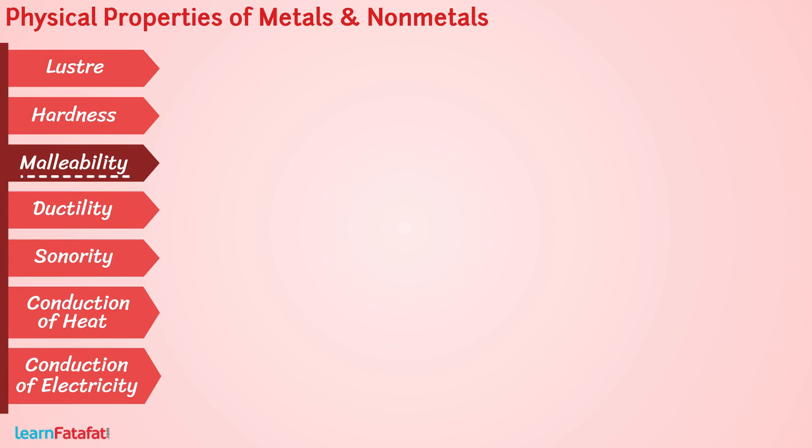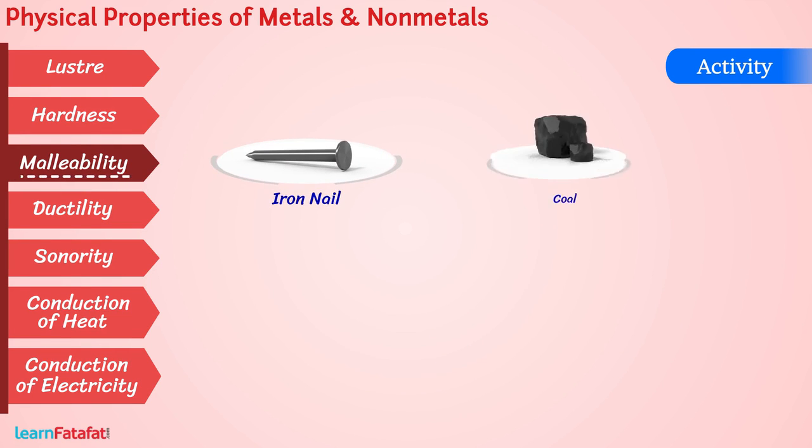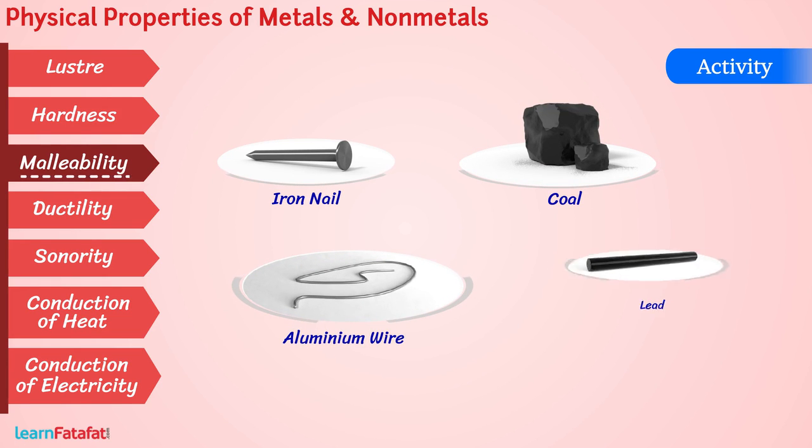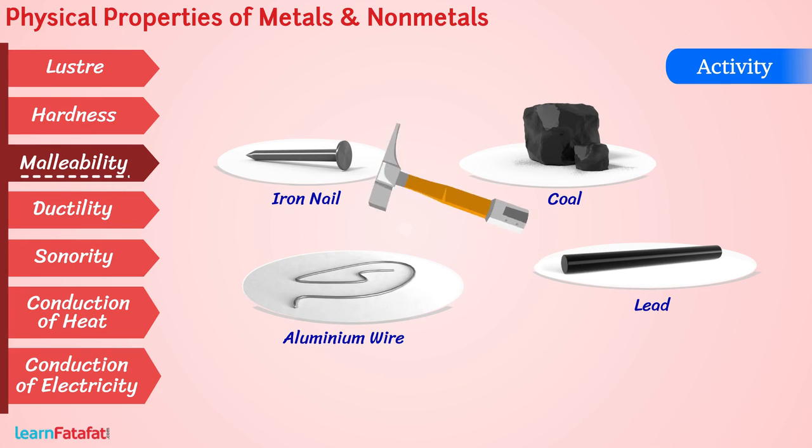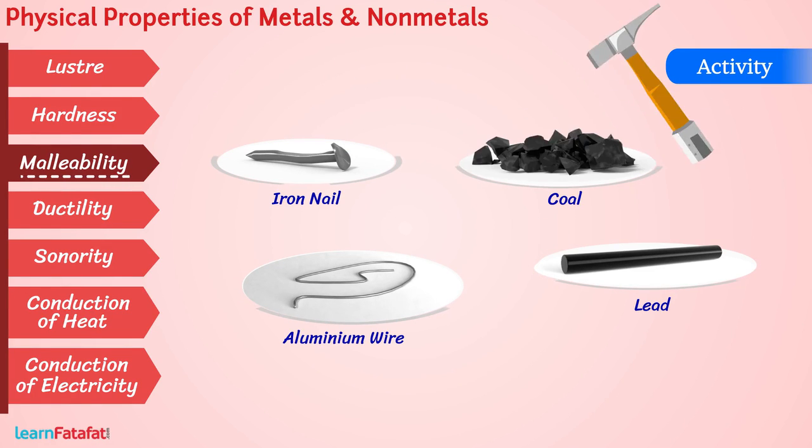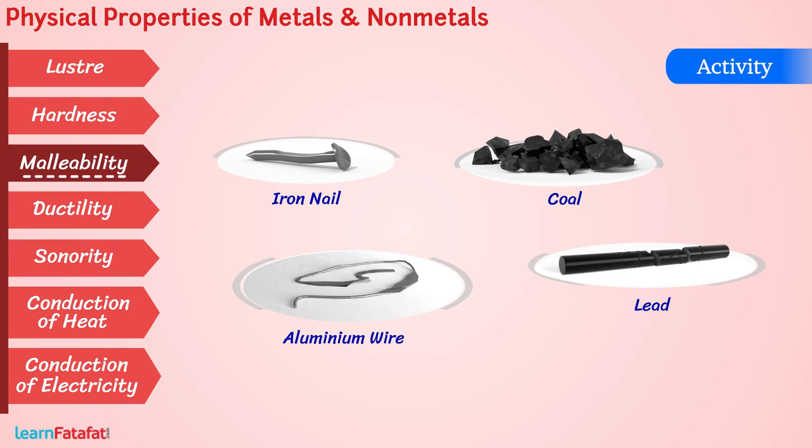Malleability: Let's perform an activity. Take an iron nail, coal piece, thick aluminum wire, and pencil lead. Beat each with a hammer. What do you observe? Iron nail and aluminum wire change their shape, but coal piece and pencil lead break into pieces.